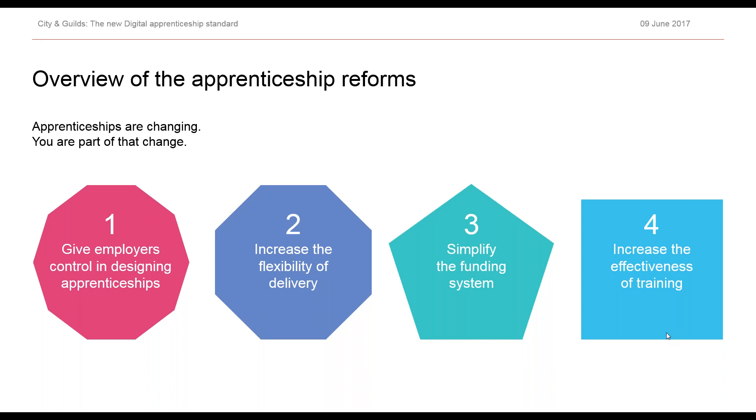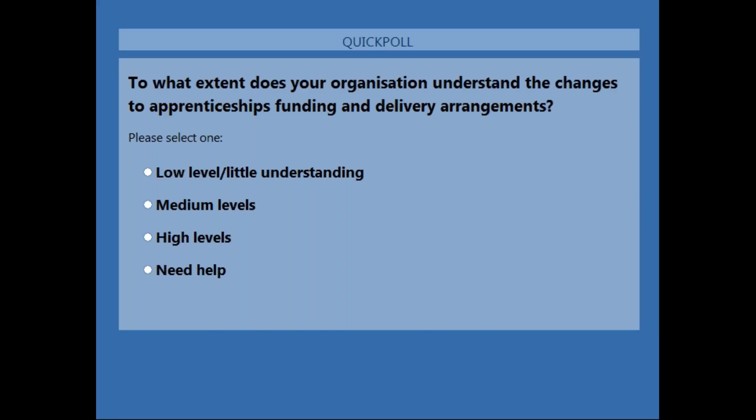We have our first poll question. The question is: to what extent does your organisation understand the changes to apprenticeship funding and delivery arrangements? If you could place your answers — we have: low level or little understanding, medium level, high level, or need help.